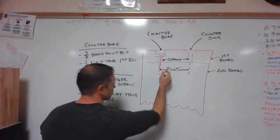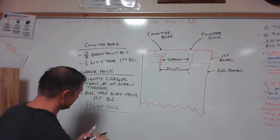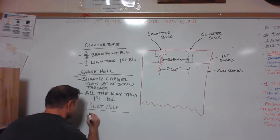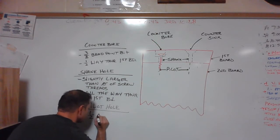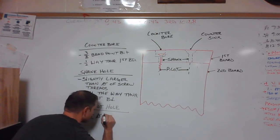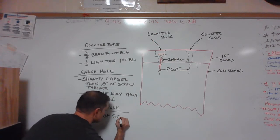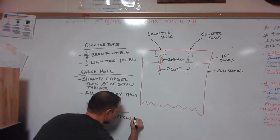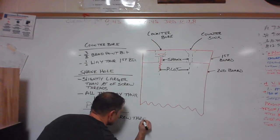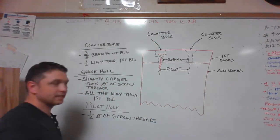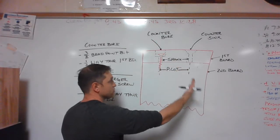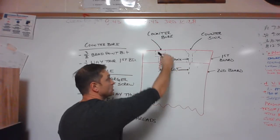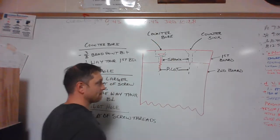So pilot hole, how we determine the size we're making that is half the diameter of the screw threads. That's the bit size, half diameter. And the depth again depends on the screw that we're using. So I don't know if you're using a one inch screw, a three inch screw, so we're going to drill it deep enough to accommodate the screw.